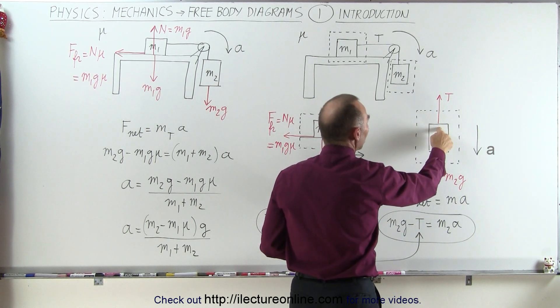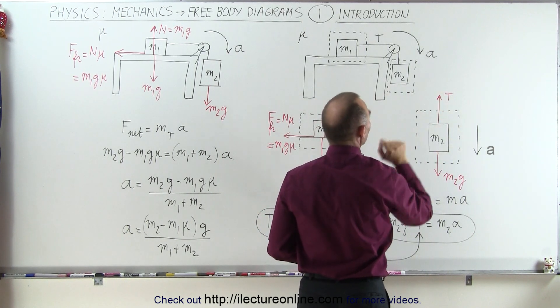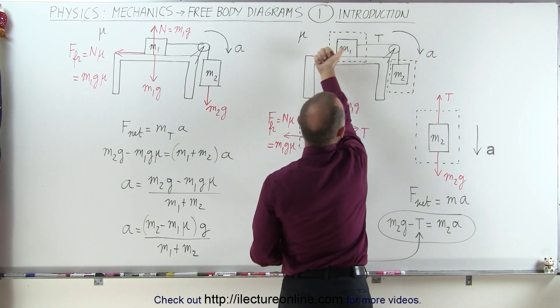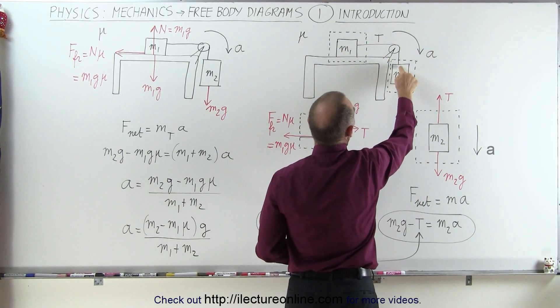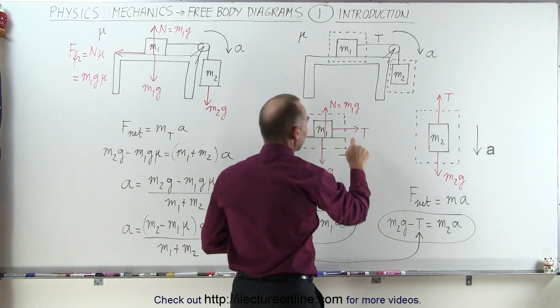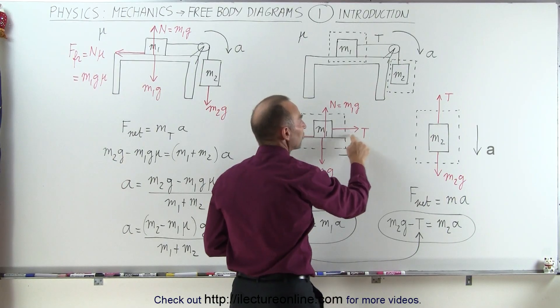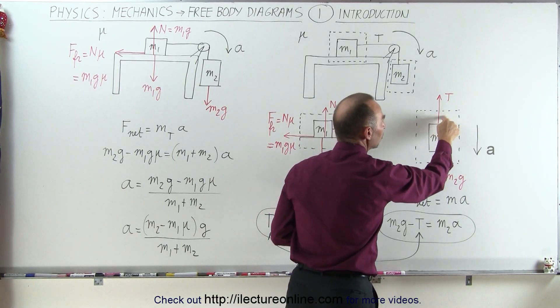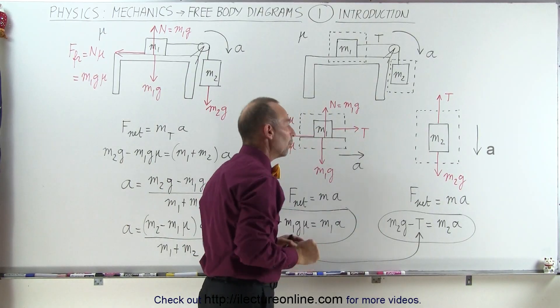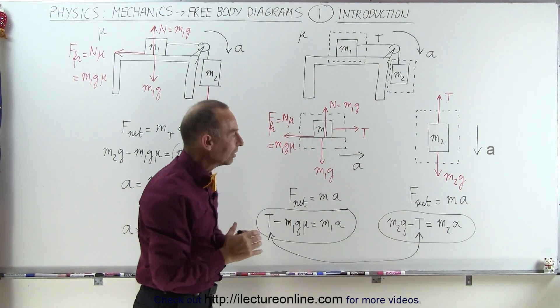So here we can see that the tension relative to m1 pulls to the right, the tension over here relative to m2 pulls upwards. You see that here this tension aids acceleration and this tension opposes the acceleration relative to m2. And of course this is relative to m1, so it's always what it's relative to.